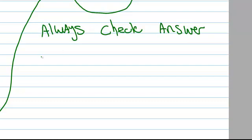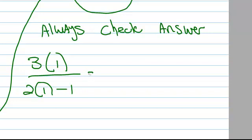So one way to check it is to plug it back in. So let's just plug this back in. So we have 3 times 1 over 2 times 1, that's a parenthesis, minus 1. And the numerator, 3 times 1 is 3.